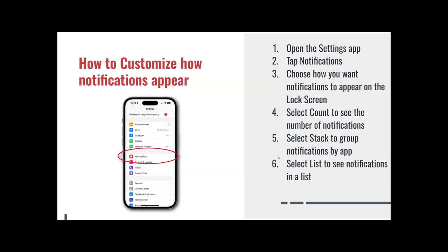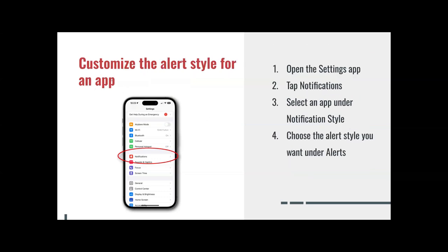We'll see all that in the video because I know it's a little bit confusing right now. To customize the alert style for an app — same steps — open the Settings app, tap Notifications, select an app under Notification Style, then choose the alert style you want under Alerts.